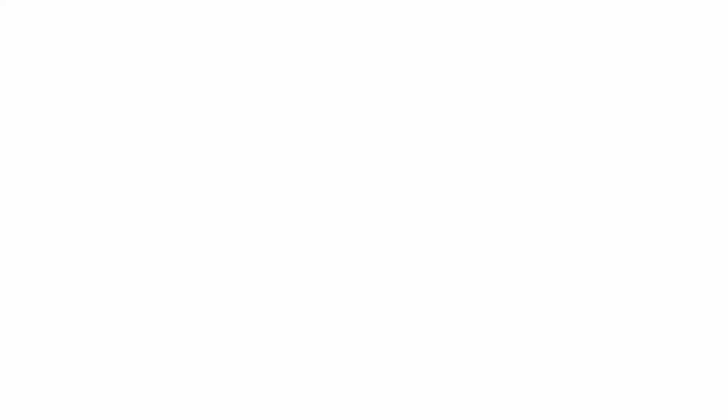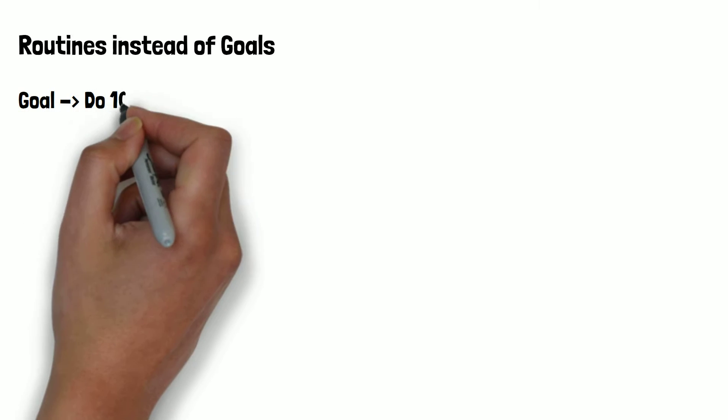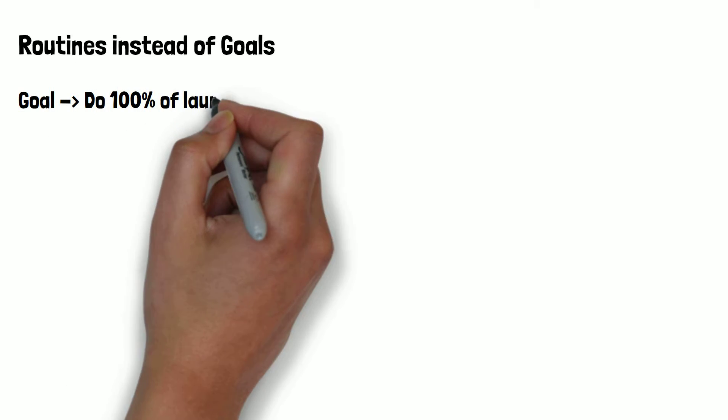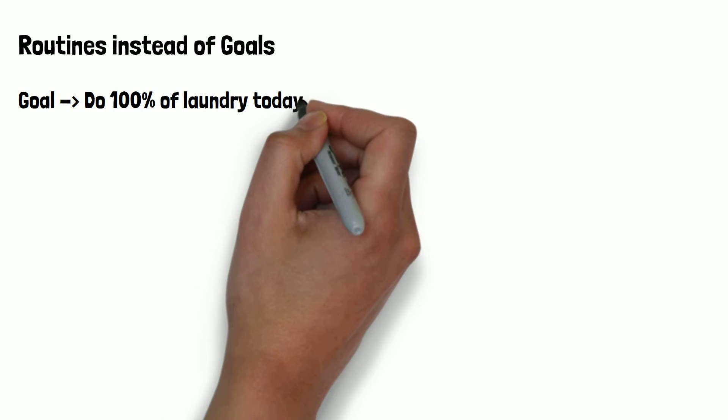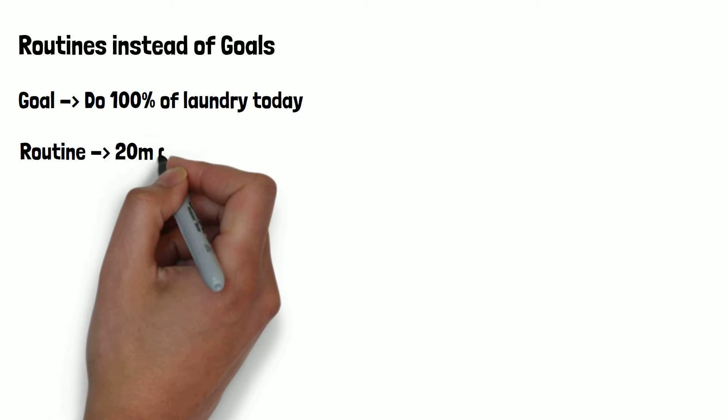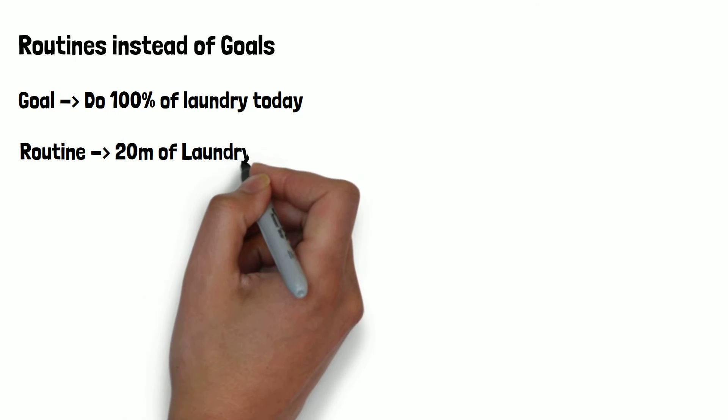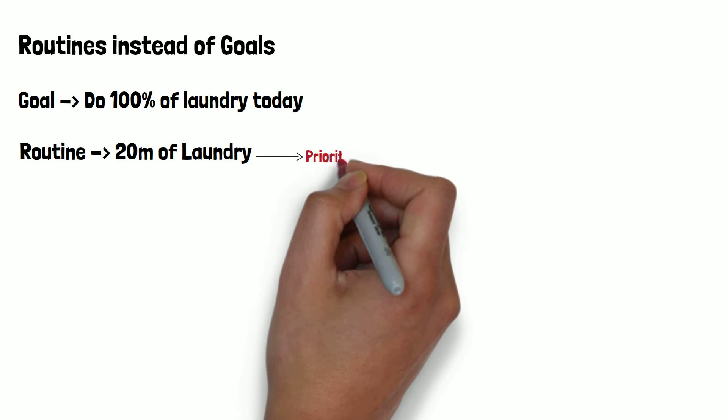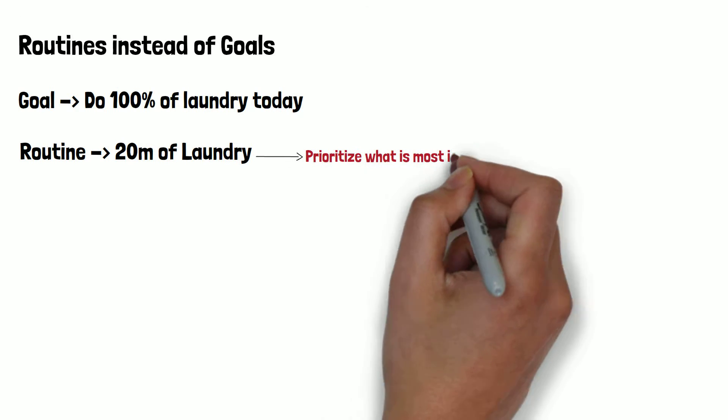Instead of doing laundry until laundry is 100% done, have a routine of doing laundry for 15 to 20 minutes a day and within that time frame, prioritize that which is most important to wash. You won't get all of it done every day, but chances are, one of those days,